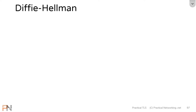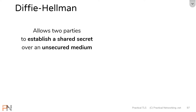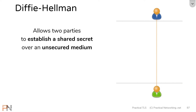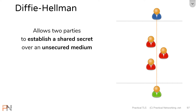The Diffie-Hellman protocol is an asymmetric encryption algorithm which allows two parties to establish a shared secret over an unsecured medium. Here we have two users, the blue user and the green user. Let's just say these two users have to somehow agree upon a secret number. The problem with simply communicating that over the wire is that they don't know who else is listening in on it.